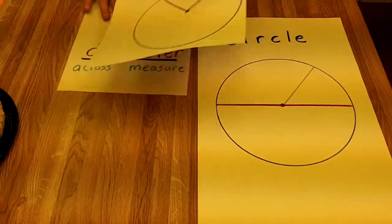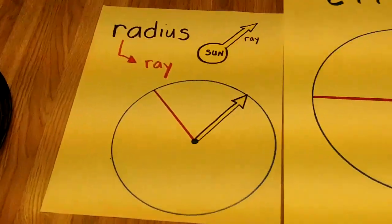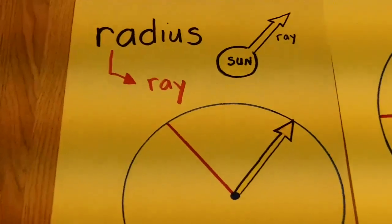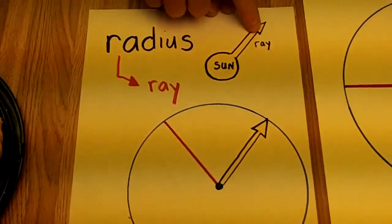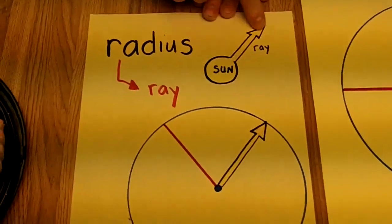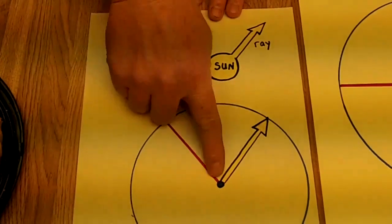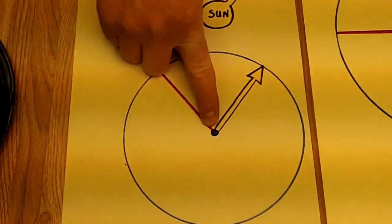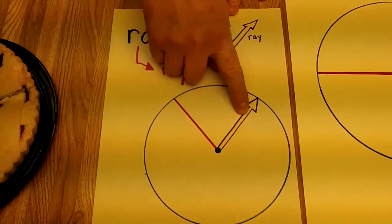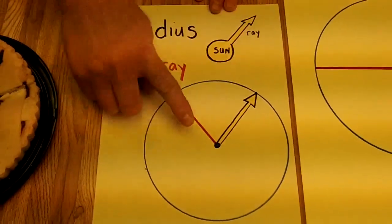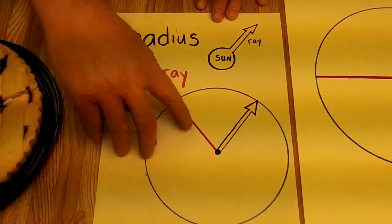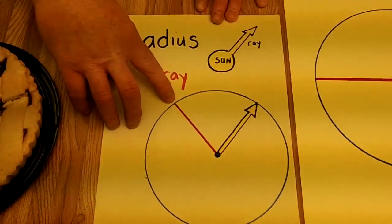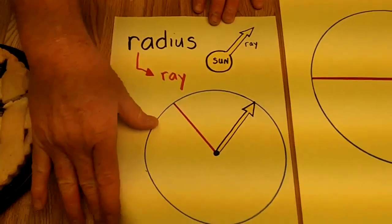Now, the word radius, it comes from the word ray. Kind of like how the sun sends rays to earth through space. This center point of a circle is kind of like the sun that sends a ray out just like this. So, this ray or radius goes from the center to the outer edge of the circle.